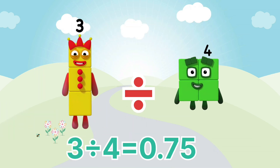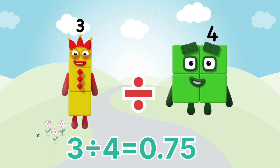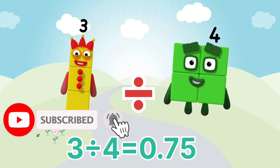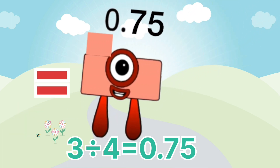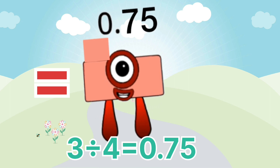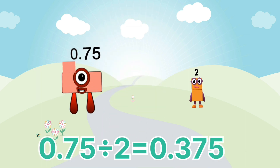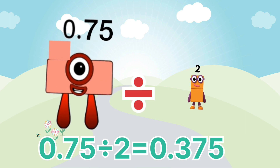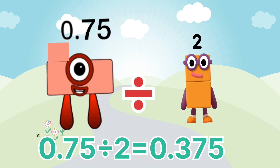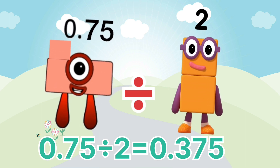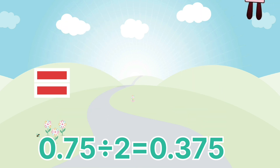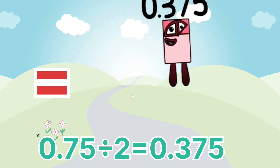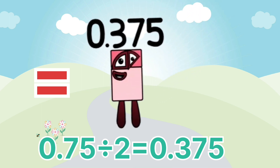3 divided by 4 equals 0.75. 0.75 divided by 2 equals 0.375.